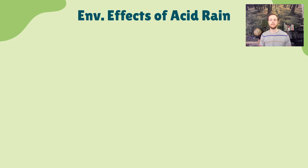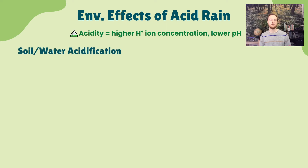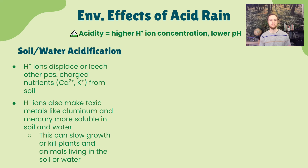Looking at the environmental effects of acid rain: acidity refers to a higher H+ ion concentration but a lower pH — a bit of a contradiction if you don't have a strong chemistry background, so commit this to memory. When water droplets with more H+ ions fall to earth, they lead to soil and water acidification. The H+ ions can displace or leach other positively charged soil nutrients, things like calcium, potassium, and magnesium that plants need to grow.